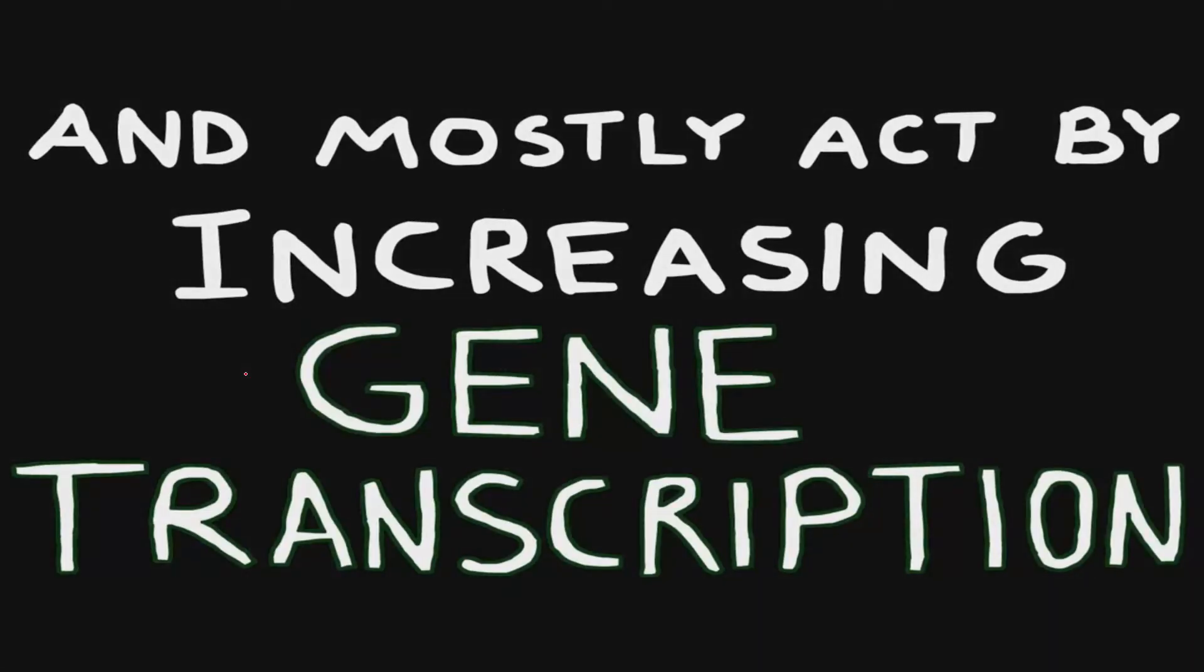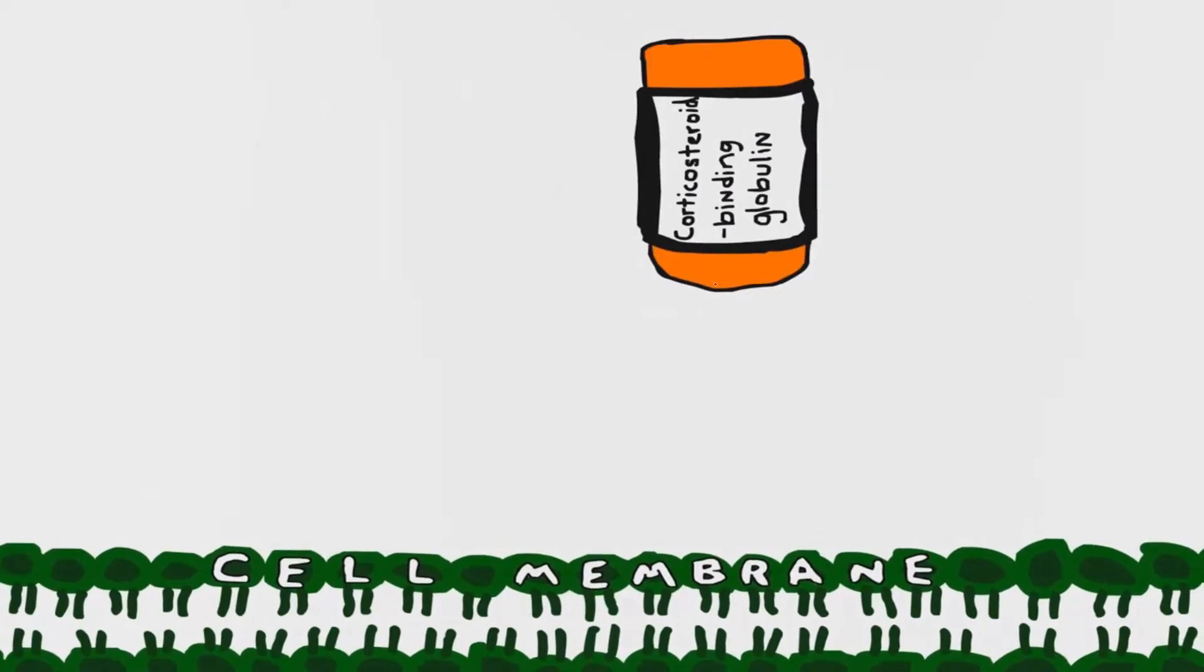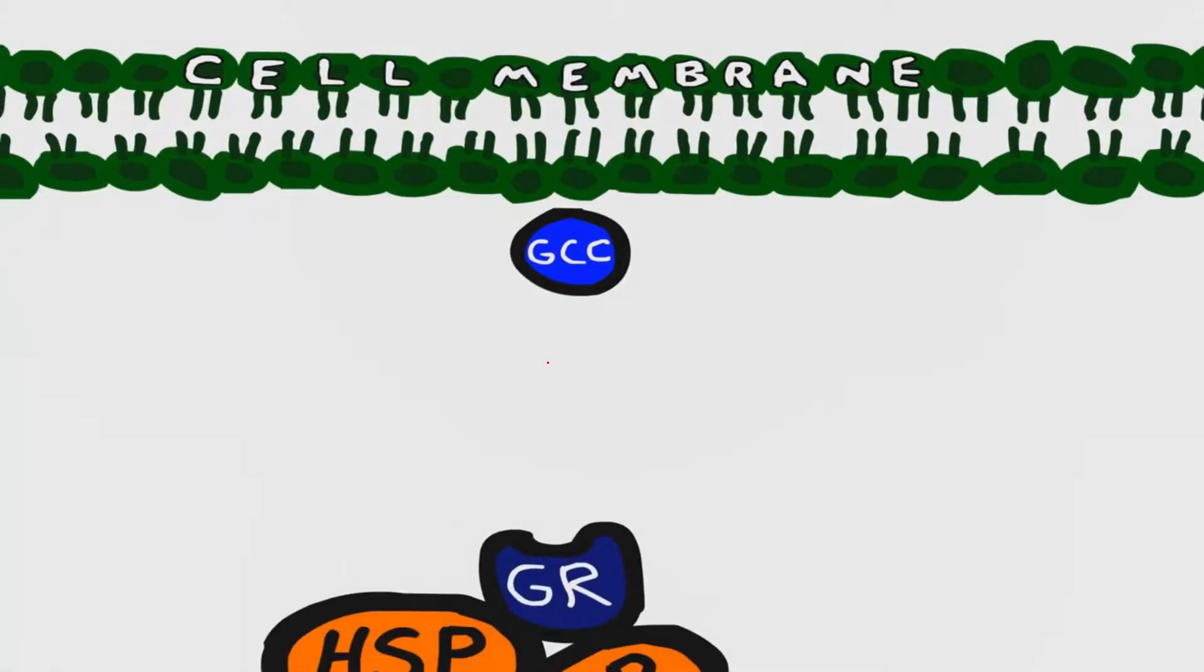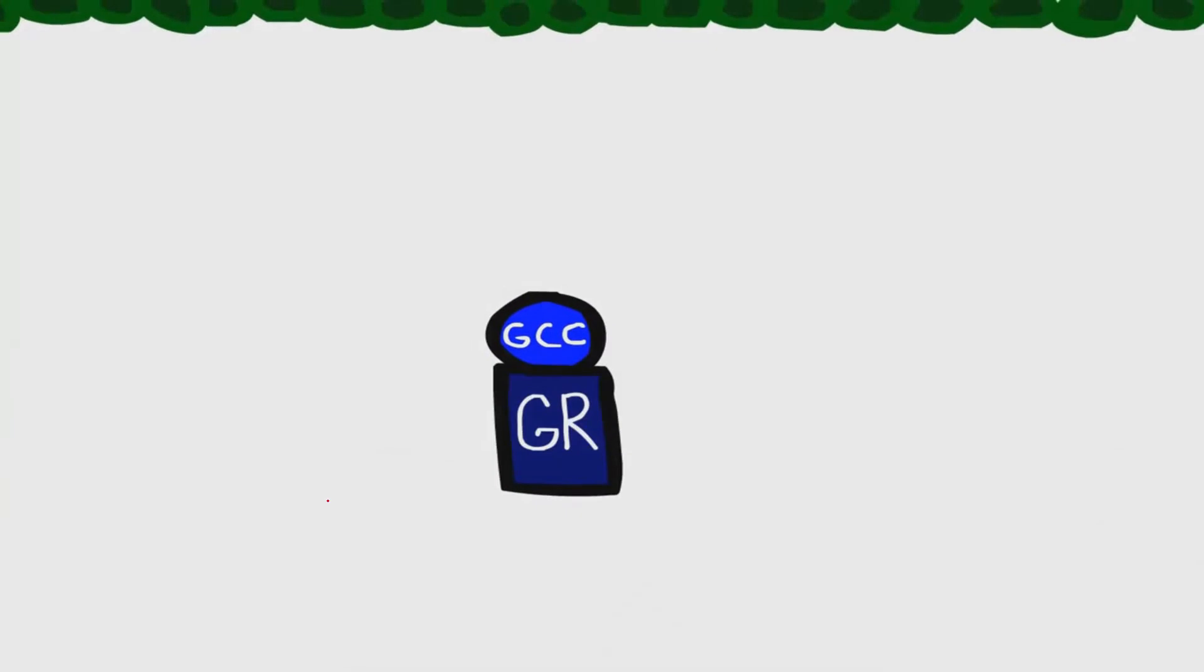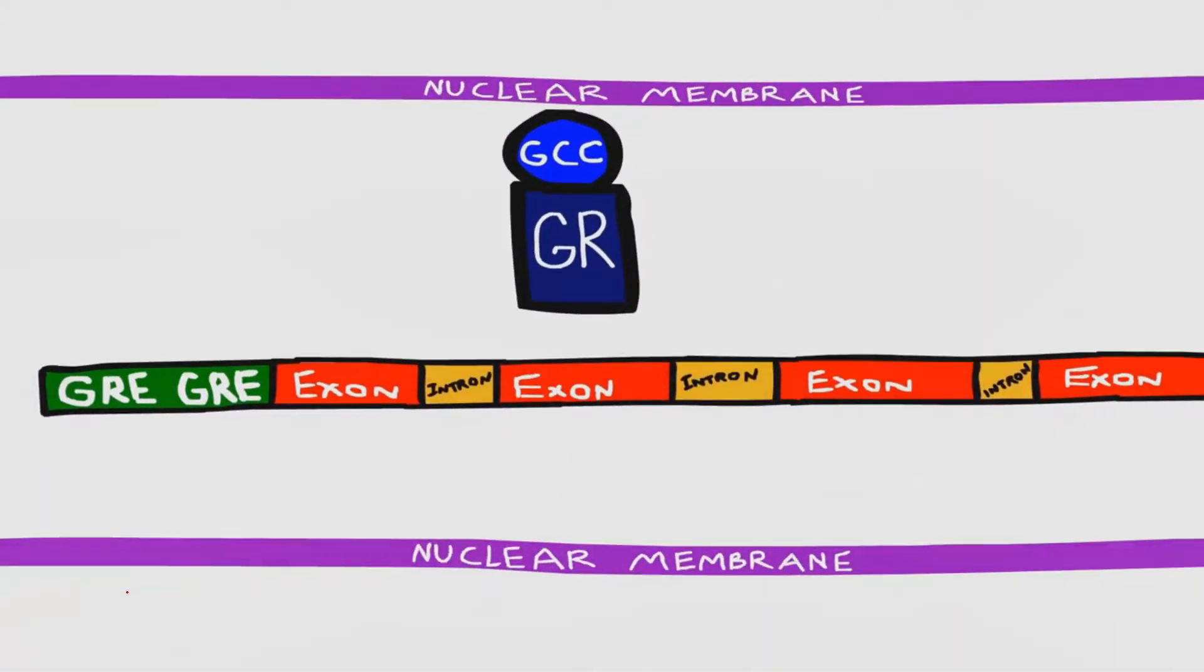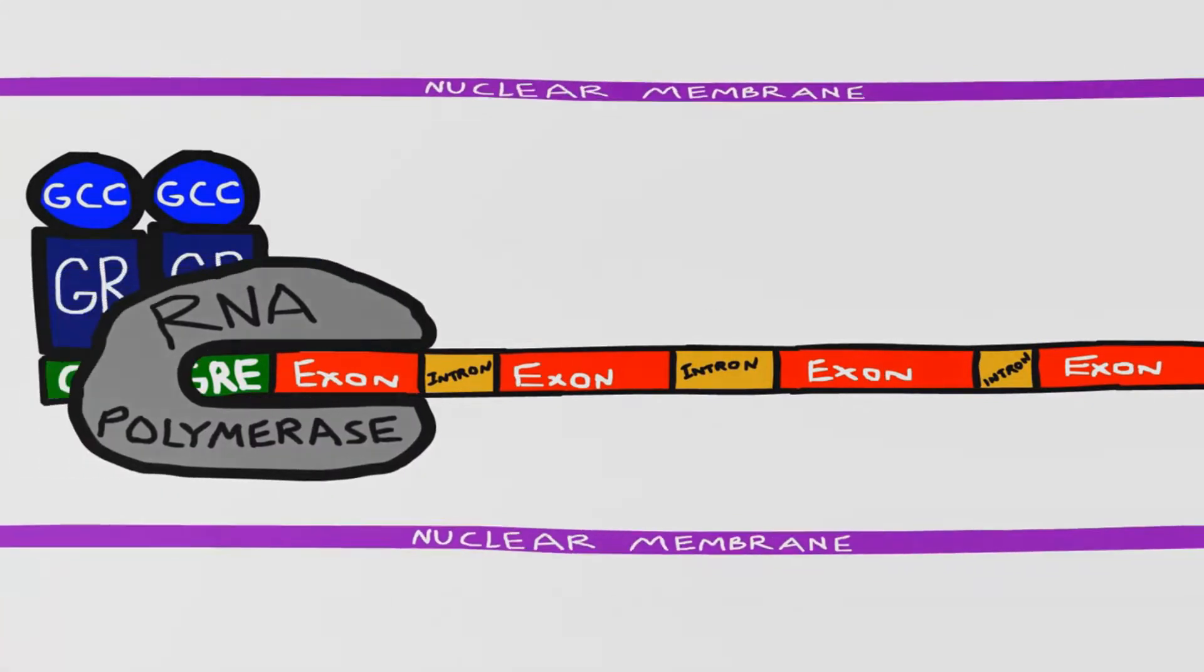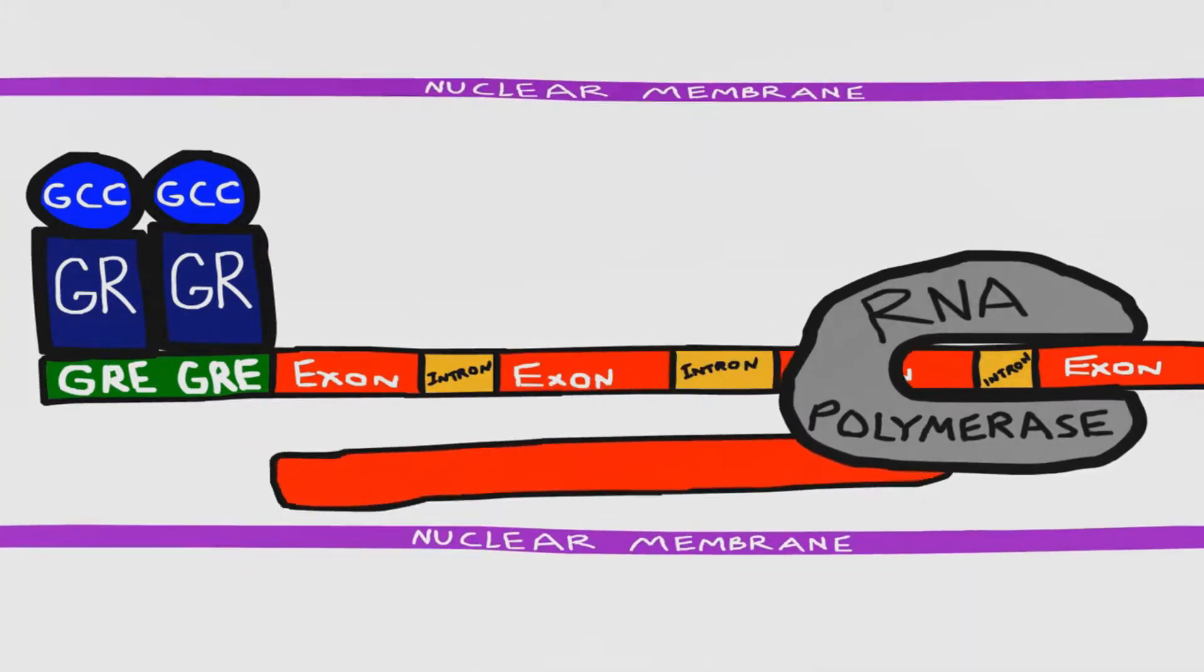They mostly act by increasing gene transcription. This is very similar in that the glucocorticoid only works when it's released from its binding protein, crosses the cell membrane, and binds the glucocorticoid receptor. This causes the release of the heat shock protein and then it dimerizes and interacts with the glucocorticoid response element on the DNA. This leads to the RNA polymerase producing some messenger RNA.